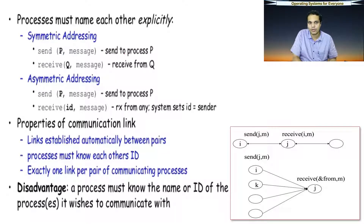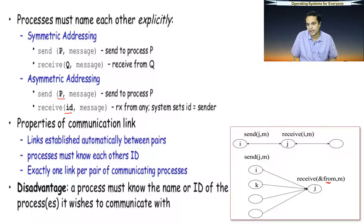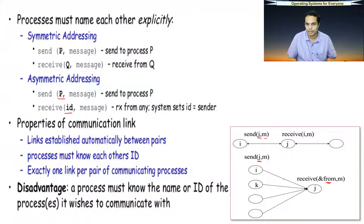To summarize: in symmetric addressing, both processes name each other. In asymmetric addressing, only the sender mentions the receiver's ID — the receiver can accept from any process. For example, process I sends to J using send(J, message), and J will mention it is going to receive a message from I. The main disadvantage remains that both processes should know the identity of one another for communication to happen.